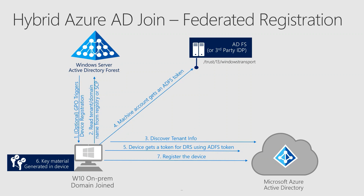Azure DRS validates the token, creates a device object, and then creates a device certificate based on the certificate request. At this stage, the device itself will show up in the Azure portal as a hybrid Azure AD joined device. After the device registration is successful, Azure AD signs a device certificate that will be used henceforth, and the workstation installs that certificate into its own machine local store.